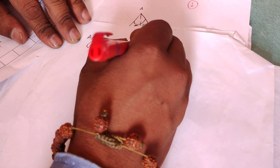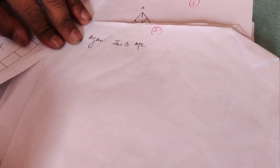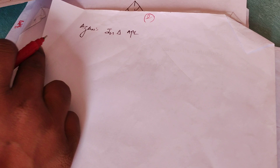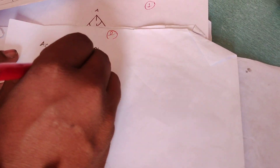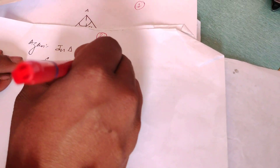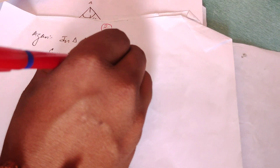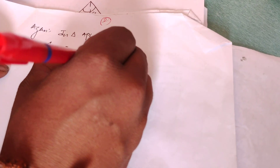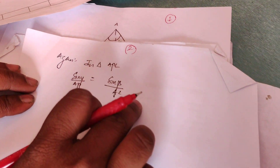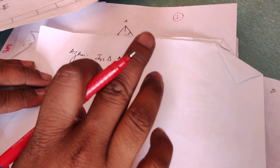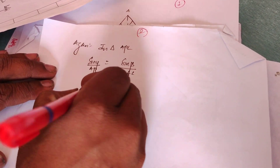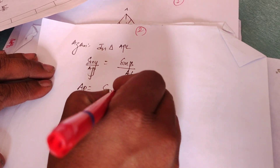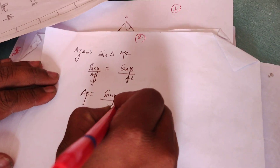In triangle APC, by the sine rule: sin y upon AP equals sin beta upon AC. Therefore, AP is equal to sin y times AC divided by sin beta.